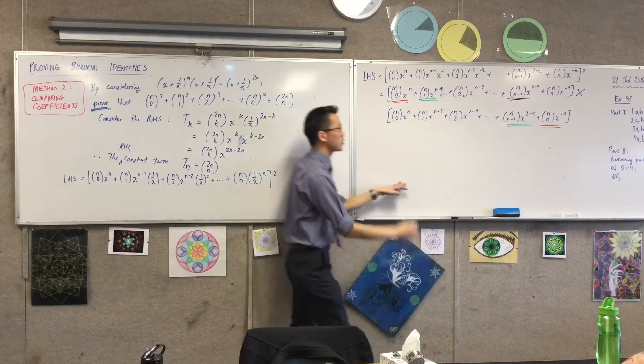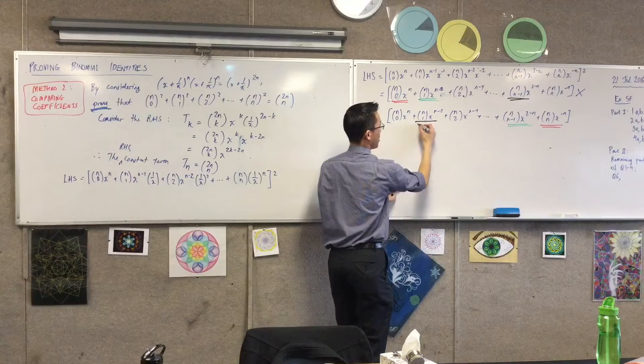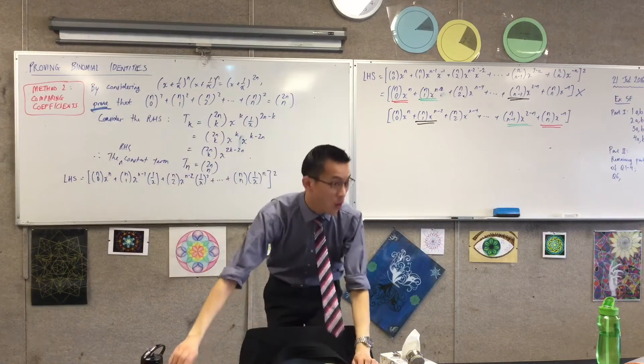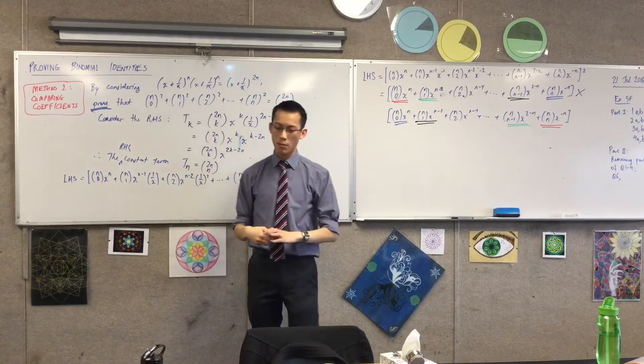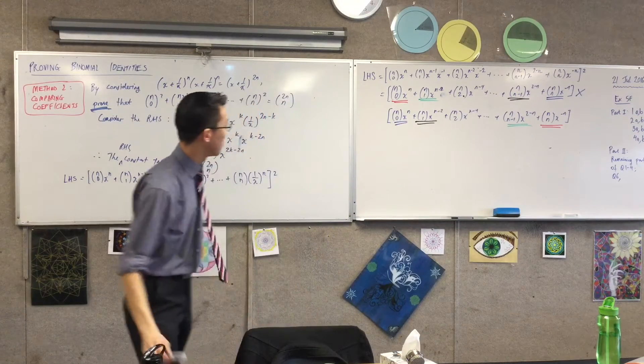And you can keep going. This is why I wrote the second last term even though I almost never do that. The second last term here pairs with the second term here. And then lastly, all the way up until the end you get these guys pairing up. So tell me, how many pairs are there?